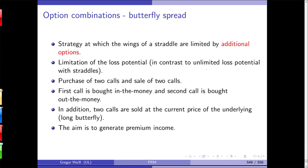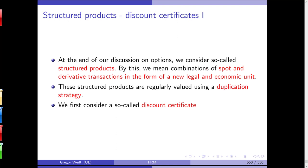Last but not least: a butterfly spread. This is a strategy in which the wings of a straddle are limited by additional options to limit the loss potential. You buy two calls — one in the money and one out of the money — and additionally sell two calls at the current price. That's a long butterfly, and the aim is to generate premium income. Most banks and insurance companies may not use these elaborate strategies, but portfolio and investment managers certainly will.